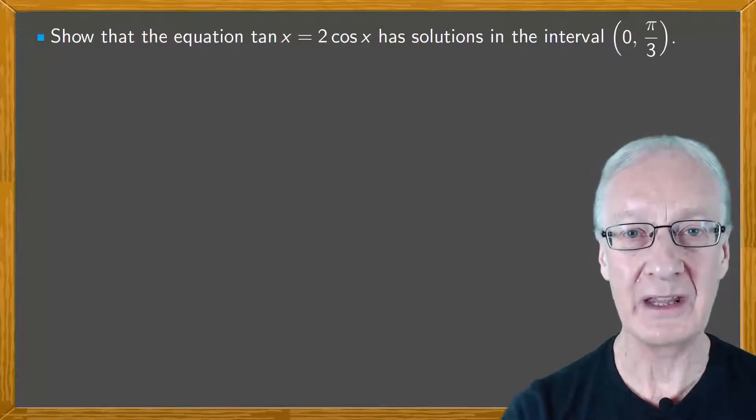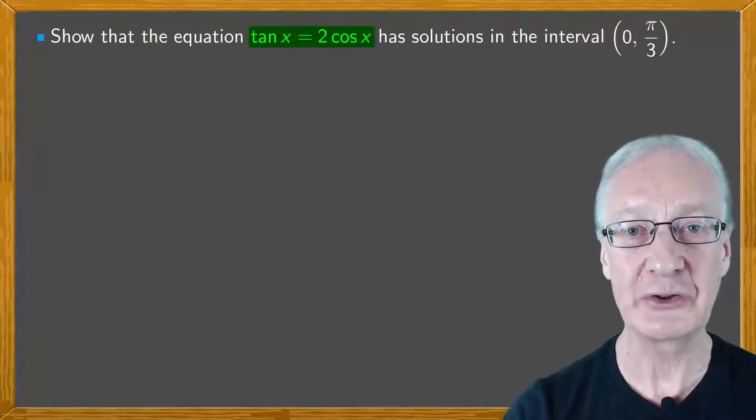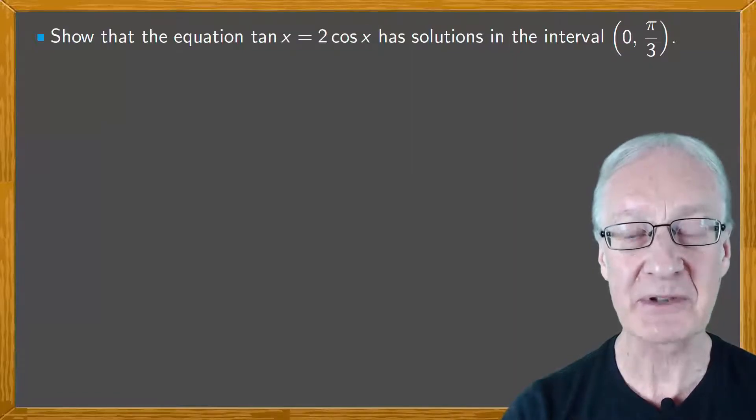We want to show that the equation tan x equals 2 cos x has some solution on the open interval (0, π/3). And as I said, we're going to use Bolzano's theorem.